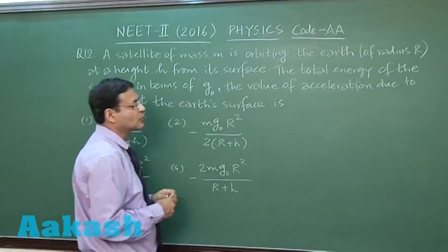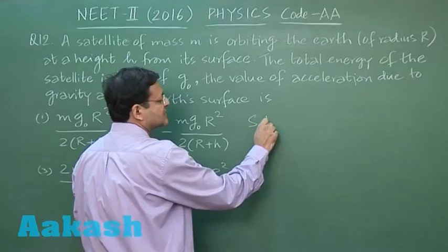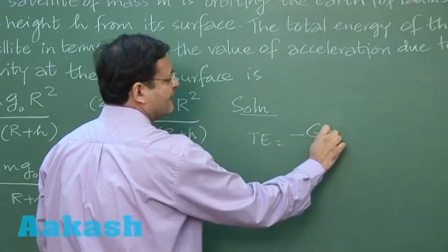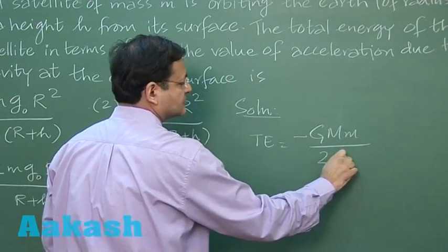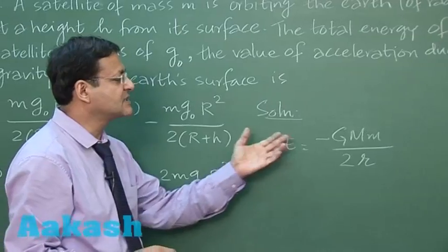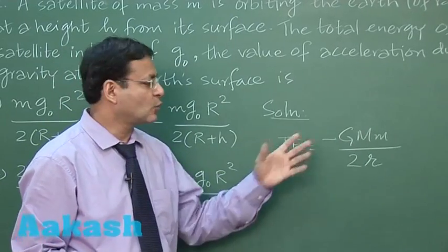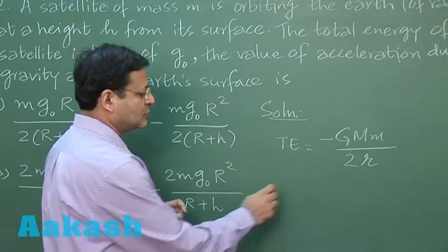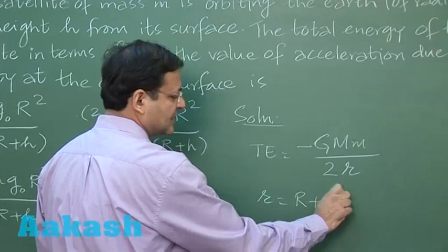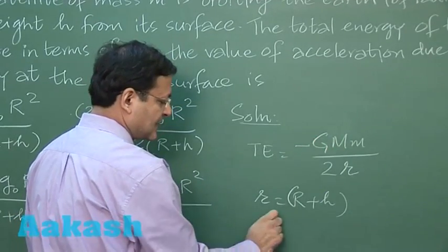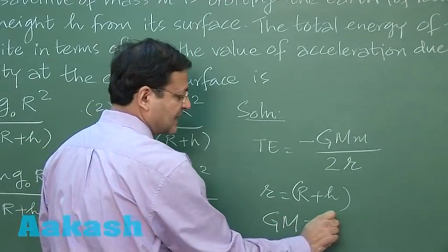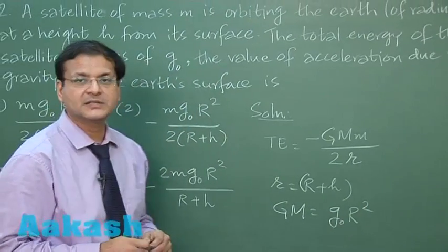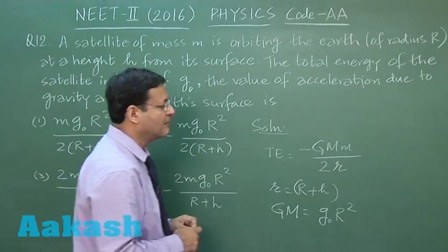You are supposed to write down the total energy. The standard expression for total energy is: minus GMm divided by twice of r. Potential energy is minus GMm/r, and total energy follows from that. This is a standard relation. Now instead of small r you have to write capital R plus h, and for capital GM you can use the standard relation GM = g₀R², where g₀ is the acceleration due to gravity on the surface of the earth. These are the substitutions you have to make.